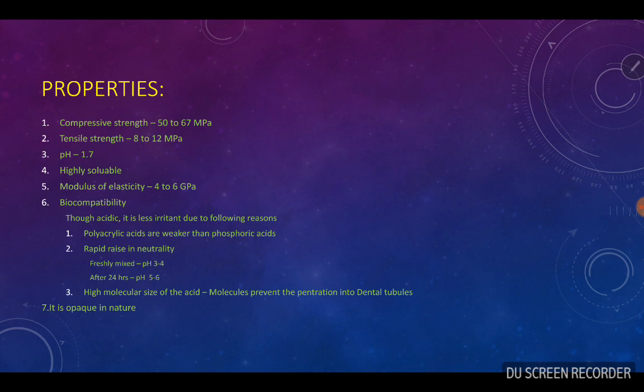Coming to the properties of zinc polycarboxylic cement: the compressive strength is 50 to 67 MPa, which is sufficient to withstand amalgam condensation. The tensile strength is 8 to 12 MPa, which is larger than zinc phosphate cement. The pH is 1.7. The modulus of elasticity or stiffness is 4 to 6 GPa. It is highly soluble compared to zinc phosphate.